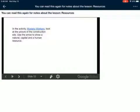In this activity, mystery workers, look at the picture of the construction site. Use an arrow to show a natural, capital, and a human resource. So, it's kind of a cool way just to practice, be able to know those different resources.